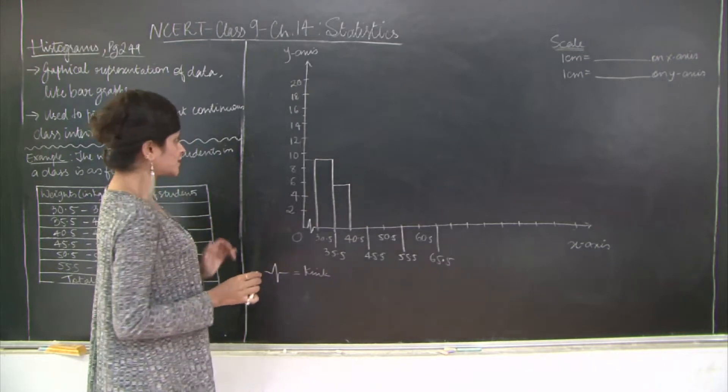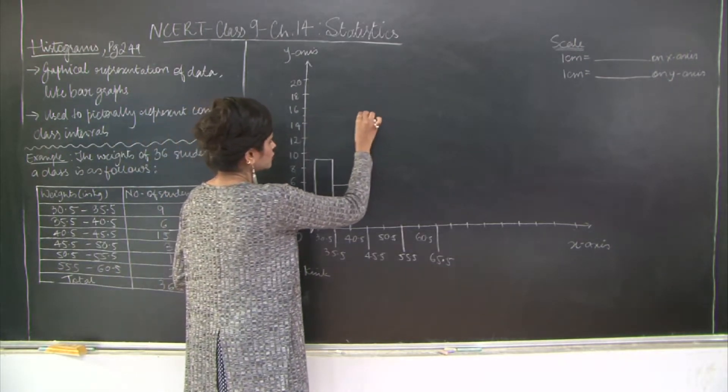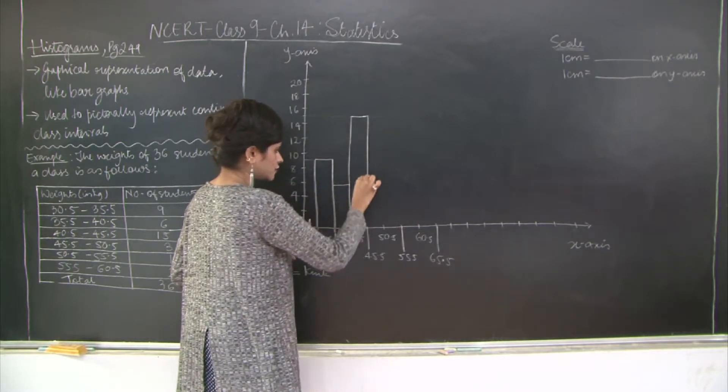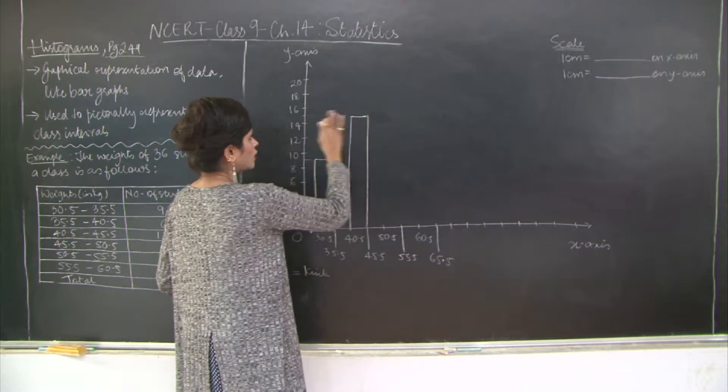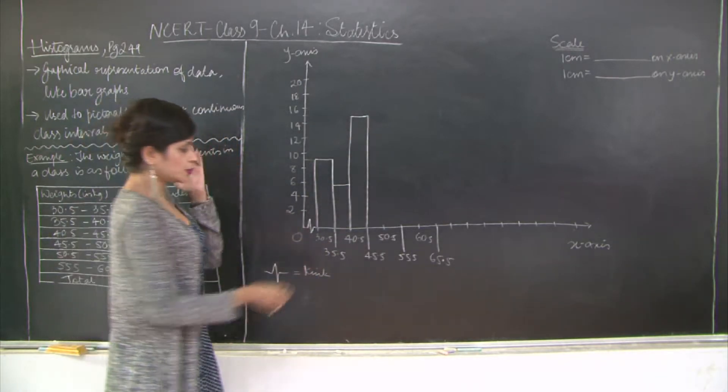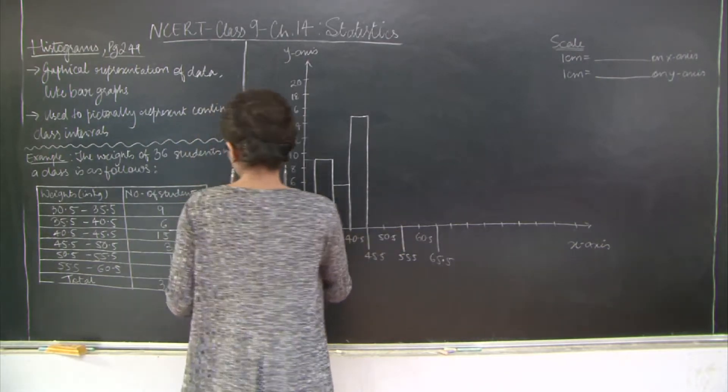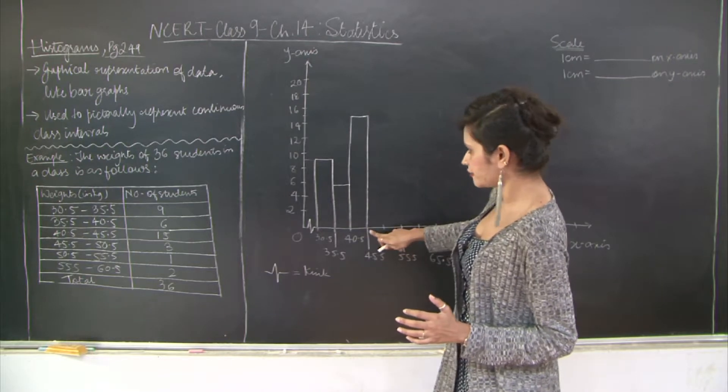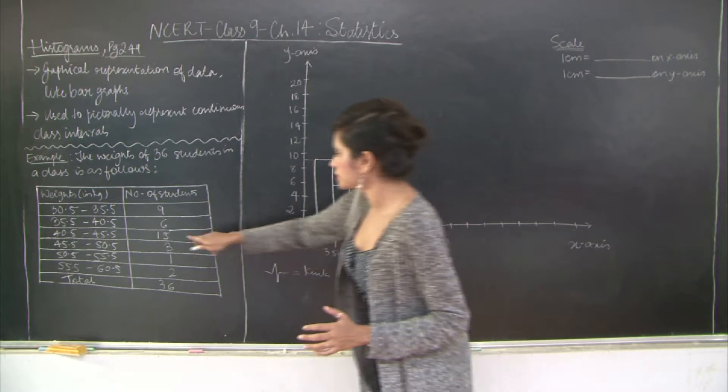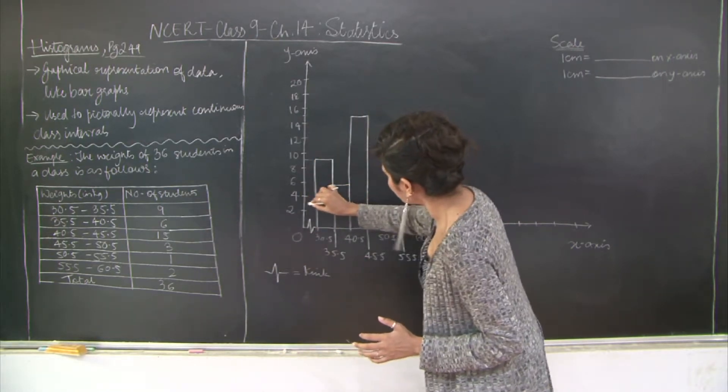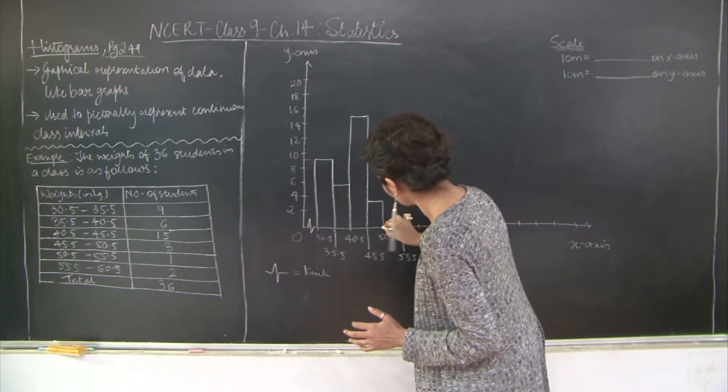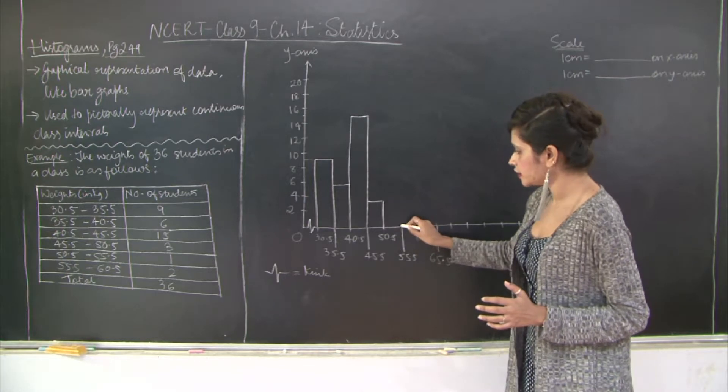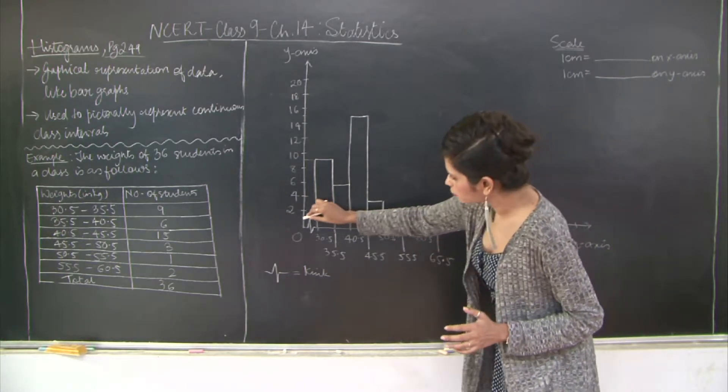Then you have the other class interval which is 15, so I'm going to draw this bar. Do you notice that all these bars are now connected to each other with no gaps? This is because of continuous class intervals. Then for 45.5 to 50.5, the count is 3. And 50.5 to 55.5 is 1.